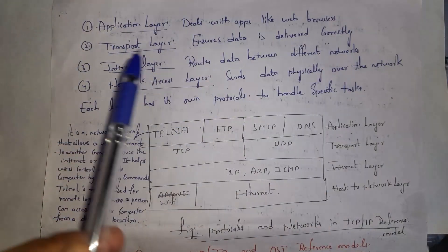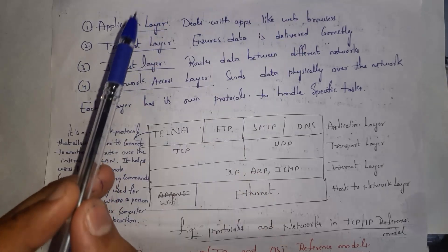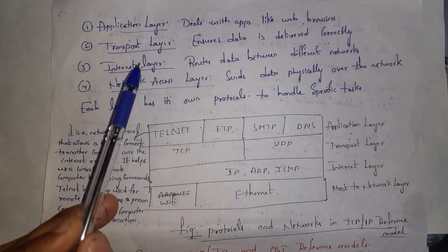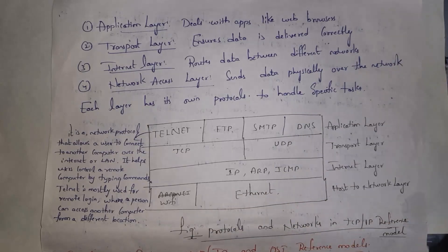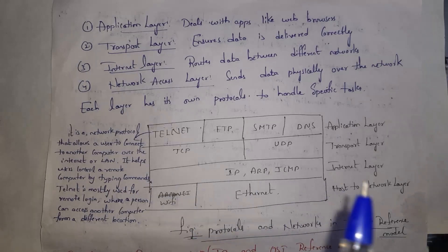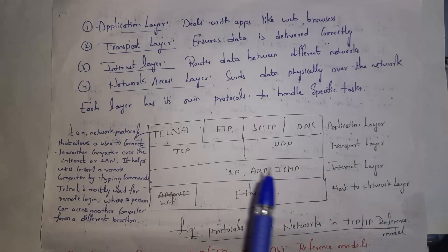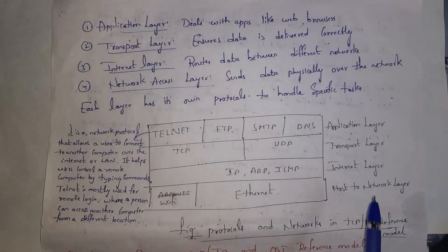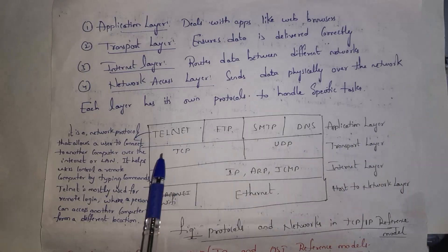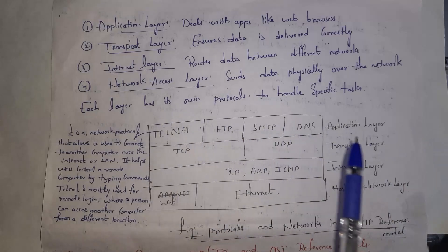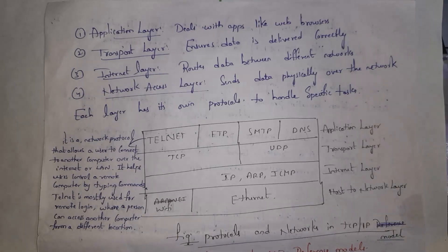To summarize: the Application Layer deals with web browsers like Google Chrome and Firefox; the Transport Layer ensures data is sent without errors; the Internet Layer sends data between different networks; and the Network Access Layer sends data physically either by wire or wireless. The Network Access Layer contains Wi-Fi and Ethernet; the Internet Layer contains IP, ARP, and ICMP protocols; the Transport Layer contains TCP and UDP; and the Application Layer contains Telnet, FTP, SMTP, HTTP, and DNS protocols.